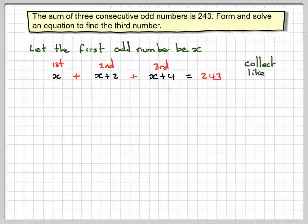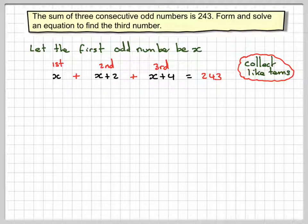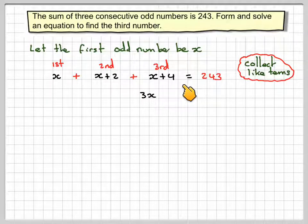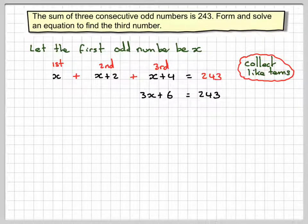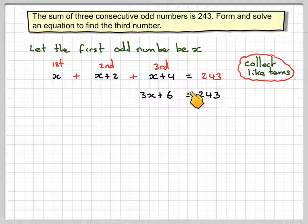Collect together like terms. So we've got x plus x plus x, which is 3x. And then 2 plus 4, which makes plus 6, still equal to 243. So this is the equation that I've formed.